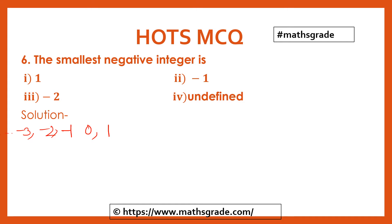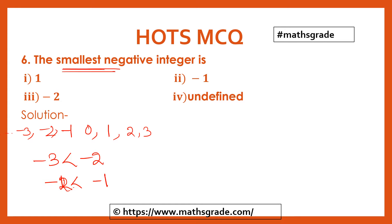From 0 onwards, all numbers to the right hand side are positive and all numbers to the left hand side are negative integers. So the smallest negative integer — we cannot define it, because there is no end to negative integers. Minus 3 is less than minus 2, and minus 2 is less than minus 1. The highest or largest negative integer is minus 1, but the smallest negative integer we cannot say — it is undefined. So option 4 is correct.